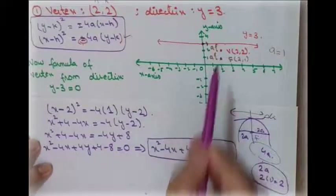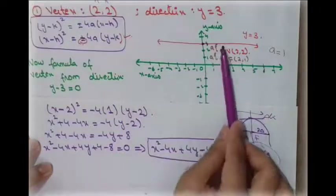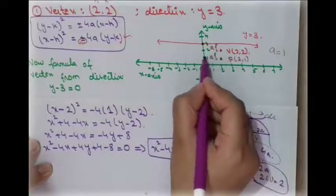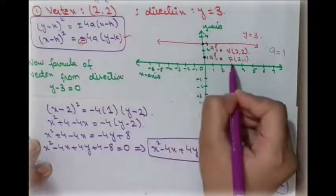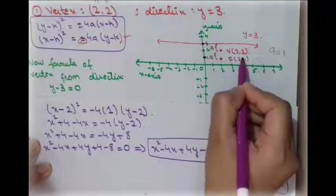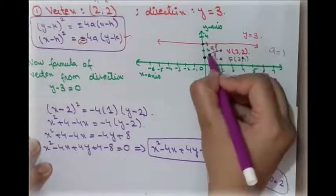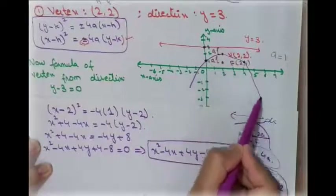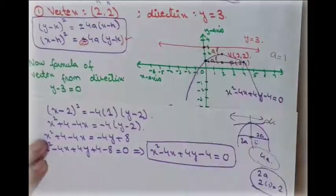We move 2 units to each side of the focus, since the parabola opens downward. That gives points (0, 1) and (4, 1) approximately. Drawing through these points and the vertex (2, 2), we can sketch how wide the parabola is. Now let's move to the next example.